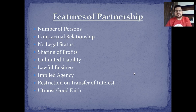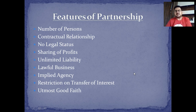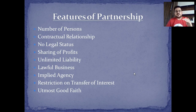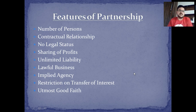Features of partnership: the number of persons required is minimum to maximum 10 for a banking business, and maximum 20 for a non-banking business. There is a contractual relationship — you have to make an agreement, and a written agreement is always preferred. Though registration is not compulsory, a registered firm has more value. The firm does not get a separate identity — whoever the two people are, that is the firm. They don't have separate status.